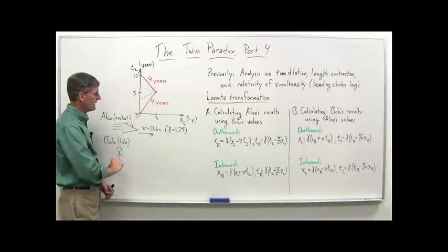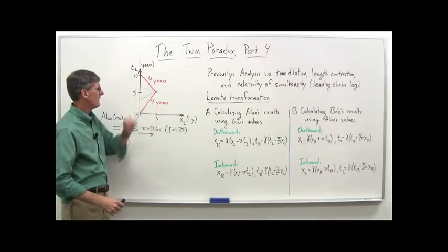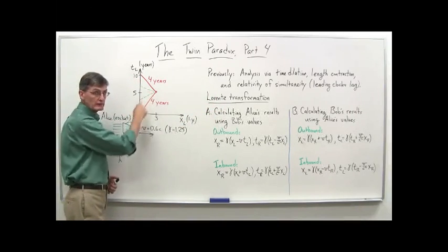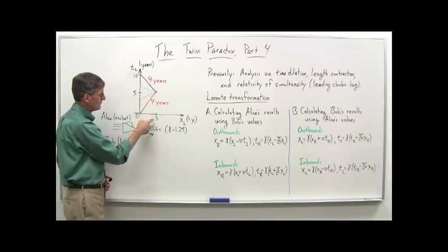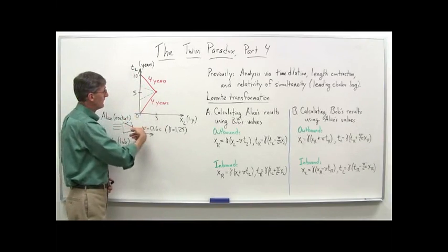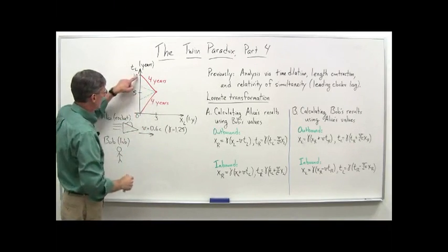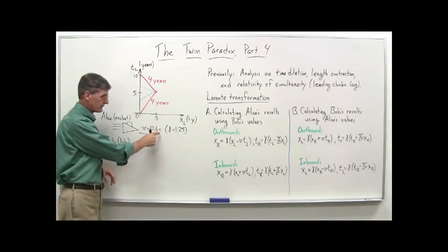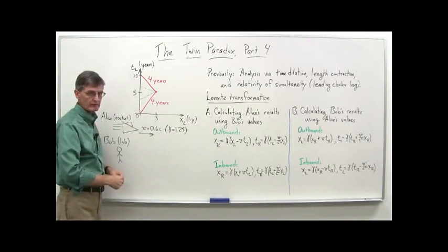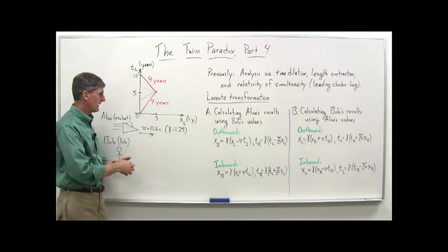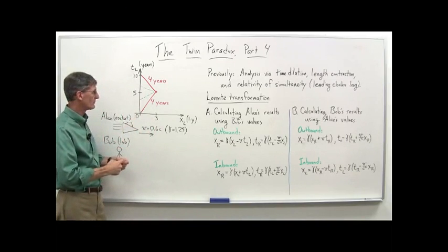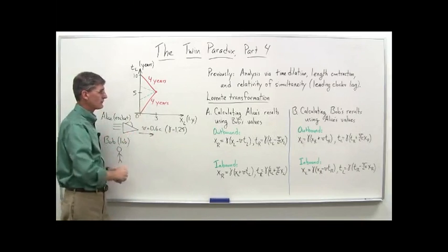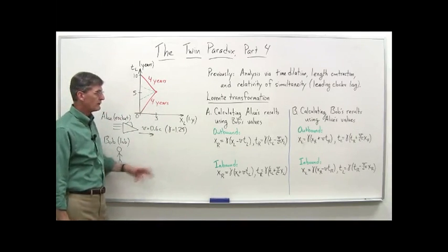Alice is moving in the rocket frame. We measure things in light years and years, and went out to a star three light years away and then traveled back again. Here's what Alice's world line looks like in Bob's frame of reference — out to three light years and then back. According to Bob, ten years later. It takes five years to get to the star; five years times 0.6c is three light years. Then another five years back. Because of time dilation, a factor of 1.25, he sees Alice's clocks tick off four years in each case.